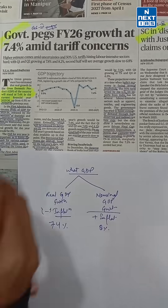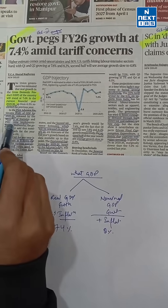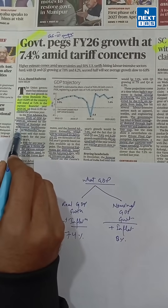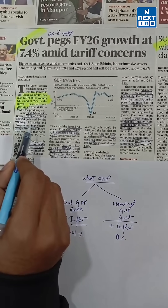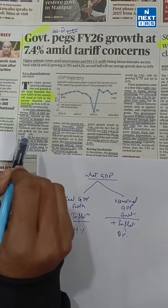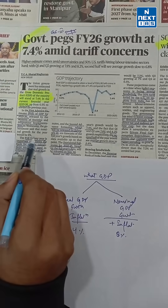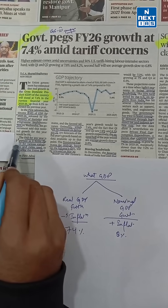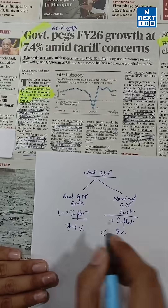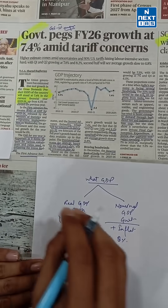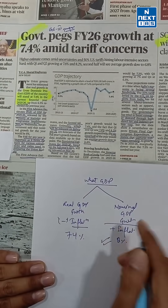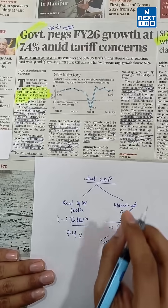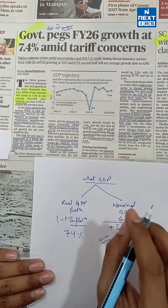The government released the first advance estimate of GDP for 2025-26, released by the MOSFI on Wednesday. The government said that nominal GDP growth for the year would be 8%. FAE — First Advance Estimate — is basically the prediction of full-year economic growth.